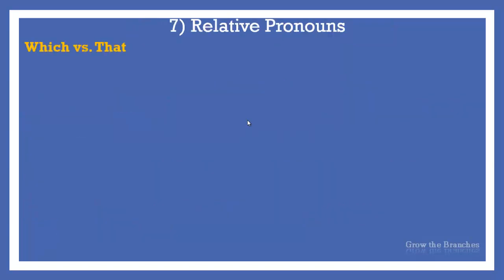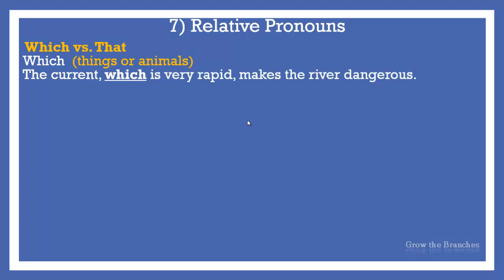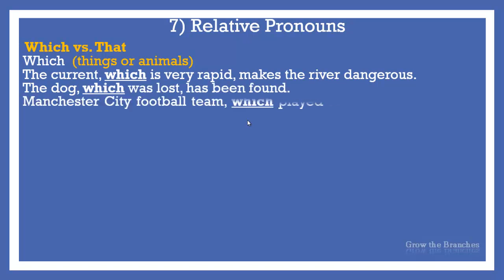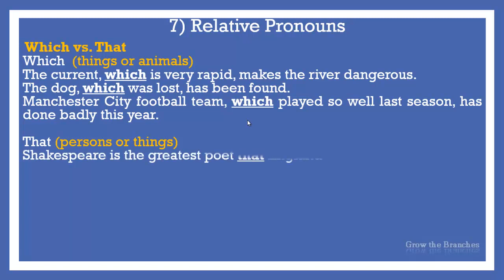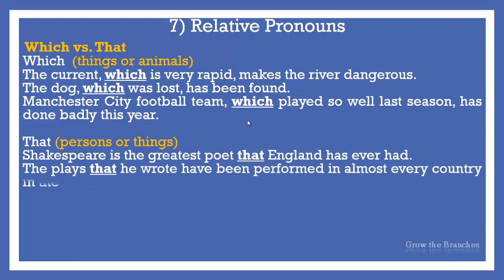Which versus that. Which, as a relative pronoun, is used only of things or animals. For example: The current, which is very rapid, makes the river dangerous. The dog, which was lost, has been found. Manchester City football team, which played so well last season, has done badly this year. That is invariable — it may be subjective or objective, singular or plural. It is used for persons or things. For example: Shakespeare is the greatest poet that England has ever had. The plays that he wrote have been performed in almost every country in the world. Have you everything that you needed?